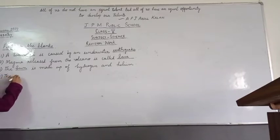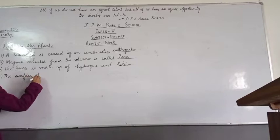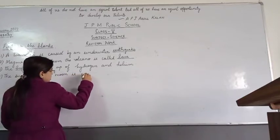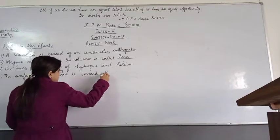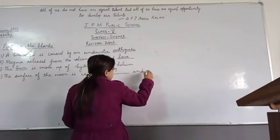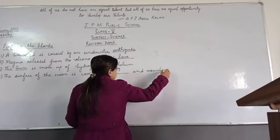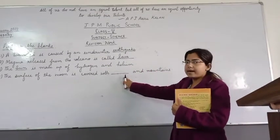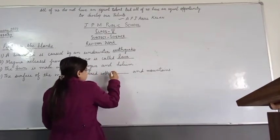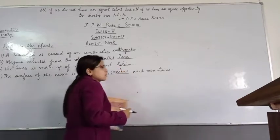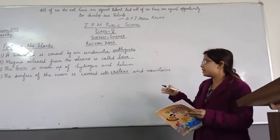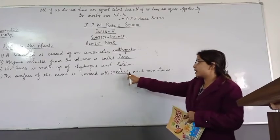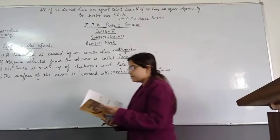Number four: The surface of the moon is covered with dash and mountains. The answer is craters. The surface of the moon is covered with craters and mountains. Now come to number 5.